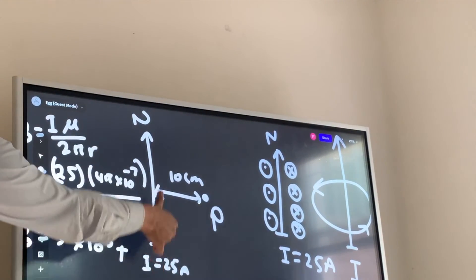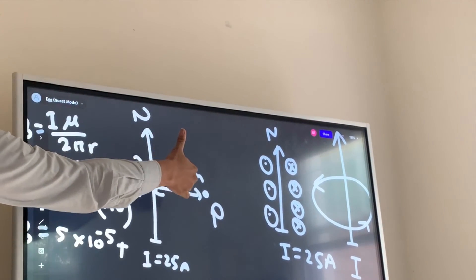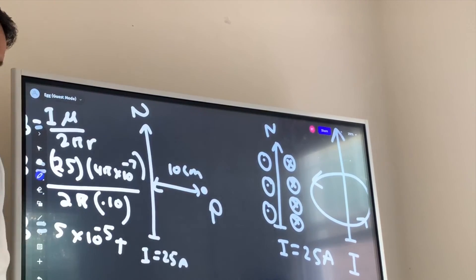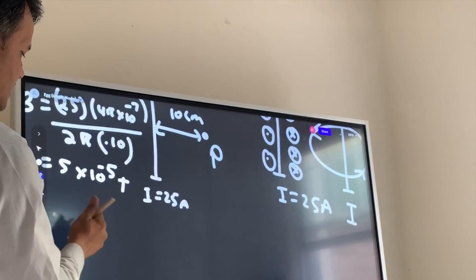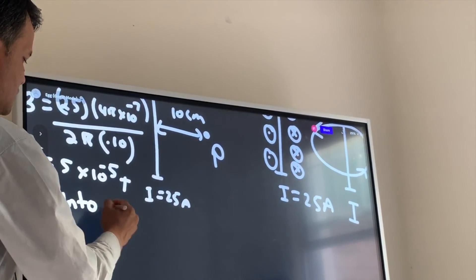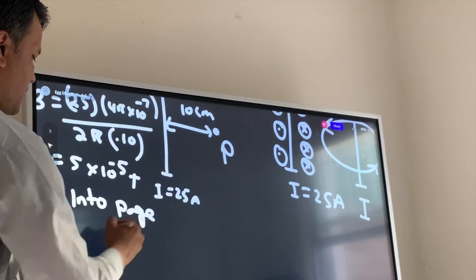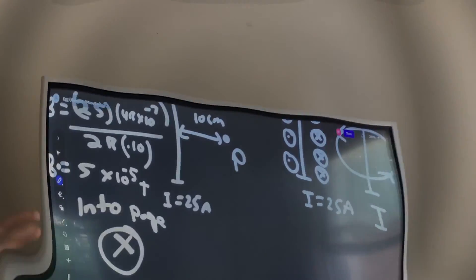Now we have to find the direction. So if we put our thumb in the direction of the current, our four fingers go into the boat. So we're going to write into page. Instead of into page, we're going to write this symbol for into page.